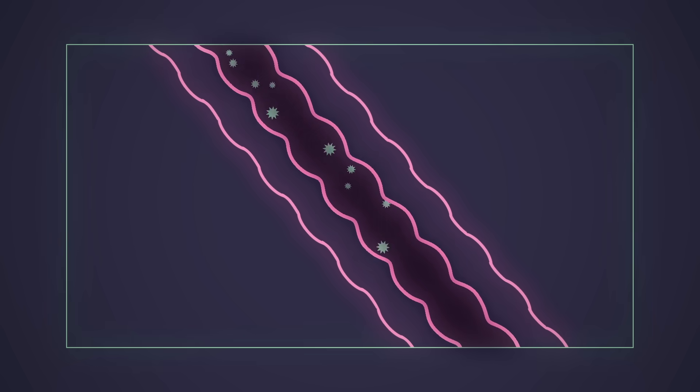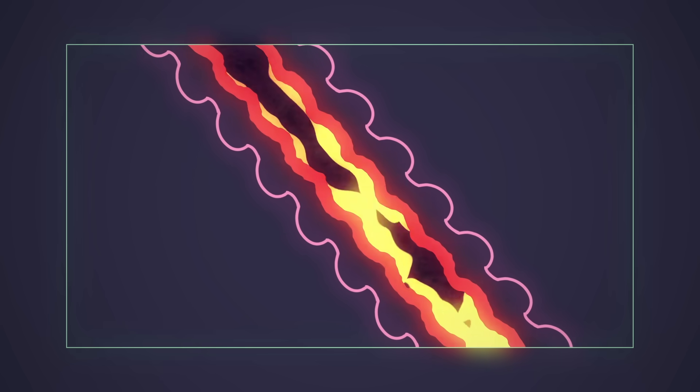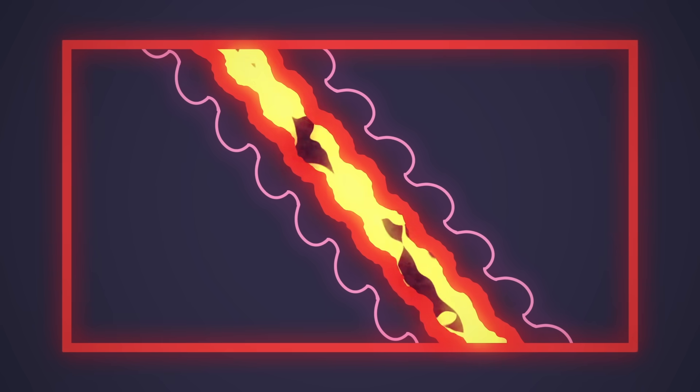Under normal conditions, the body uses this mucus to trap and clear particles, like pollen or dust. But during an asthma attack, it blocks the narrowed airways, making it even harder to breathe.